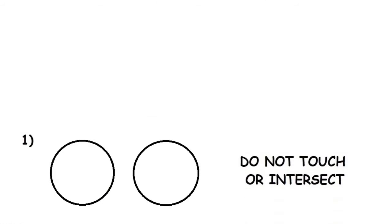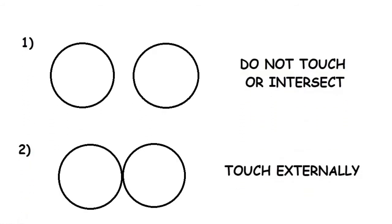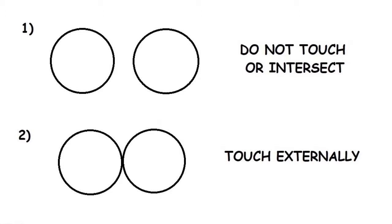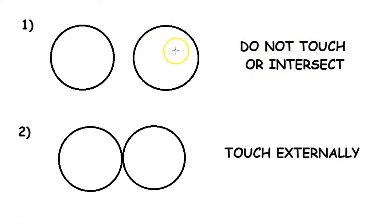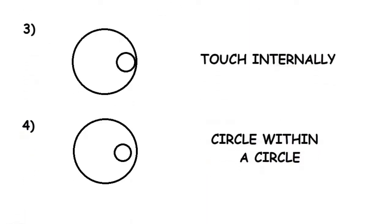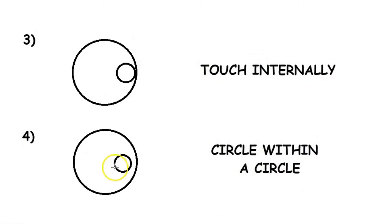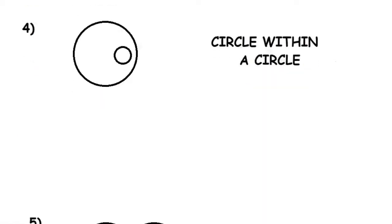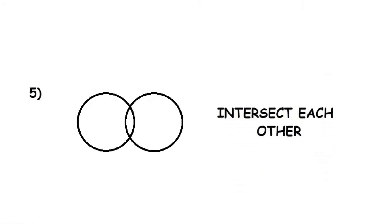There are five typical situations we come across when determining the location of two circles. Number one: when the two circles do not touch or intersect each other. Number two: when the two circles touch externally. The third situation is when the two circles touch internally. The fourth situation is when one circle is within another circle. The fifth and final situation is when the two circles intersect each other.